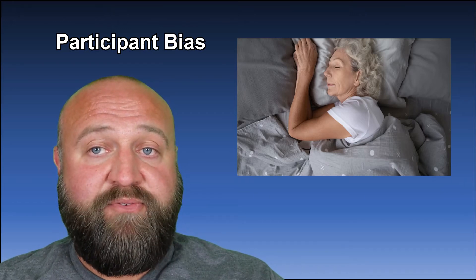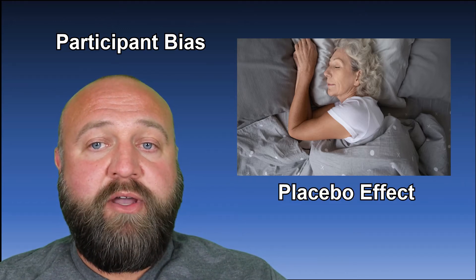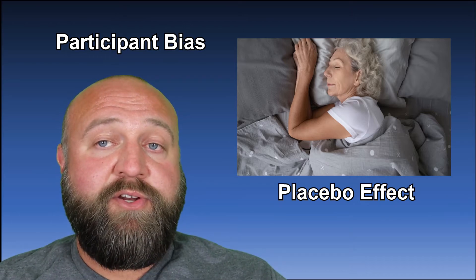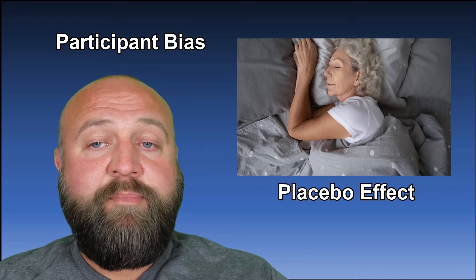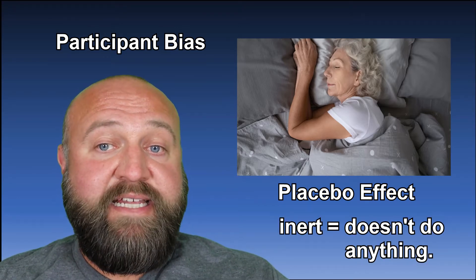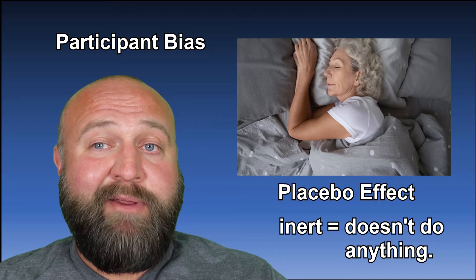In fact, we see this when we talk about the placebo effect. A placebo is an inert substance, usually a pill that is often given to people in the control group. Remember, the control group doesn't get the independent variable. In my example, that would be the insomnia medication.